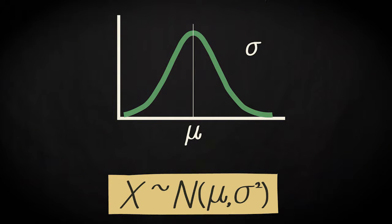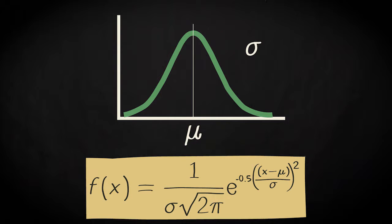The shorthand for stating that a random variable x has a normal distribution with parameters mu and sigma is this. And this is the full equation describing the probability density of such a variable.